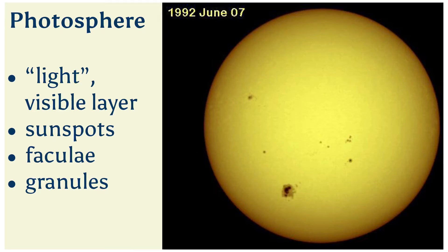A number of features can be observed in the photosphere with a simple telescope, along with a good filter to reduce the intensity of the sunlight to safe levels. Never ever look at the sun itself without some type of special filters — you can do serious damage to your eyes, even if it doesn't feel painful.